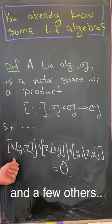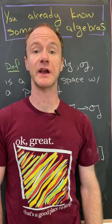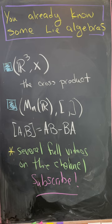But it shouldn't be scary because likely you already know two Lie algebras. Those are three-dimensional vectors with the cross product, like you learned in multivariable calculus, or n-by-n matrices with the commutator. In other words, AB minus BA.